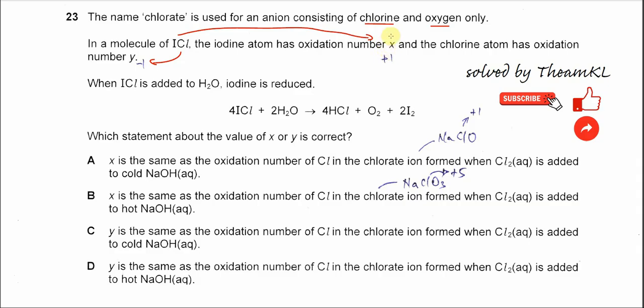So this is the X and Y number. The oxidation number of iodine is +1 and chlorine is -1.